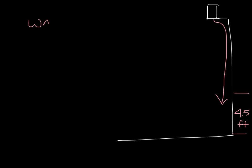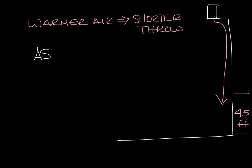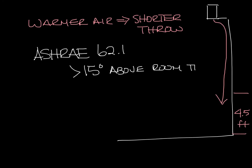The warmer the air the shorter the throw will be. In fact ASHRAE 62.1 says that if you use air warmer than 15 degrees above the room temperature you have to bring in 25% more ventilation air.